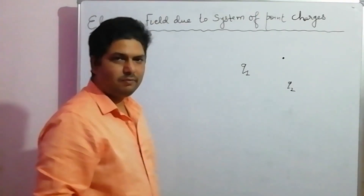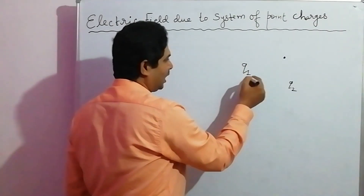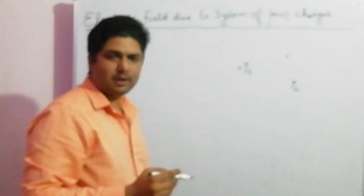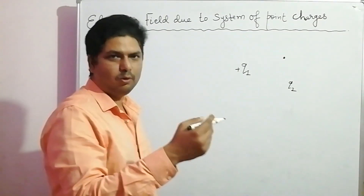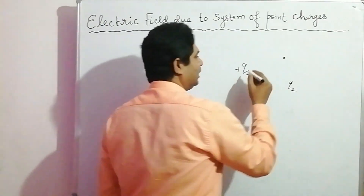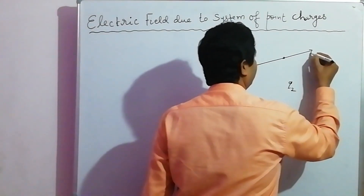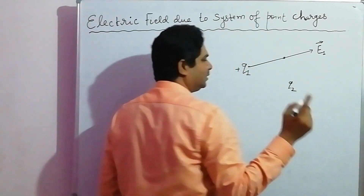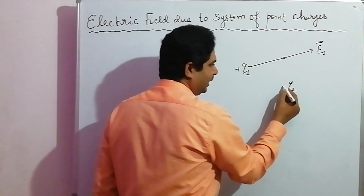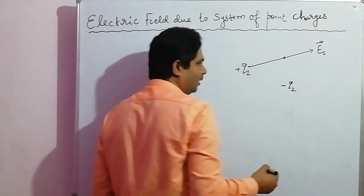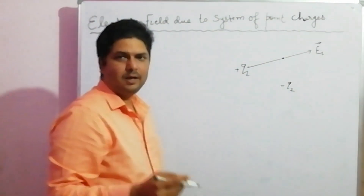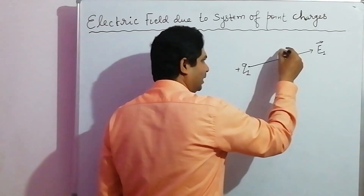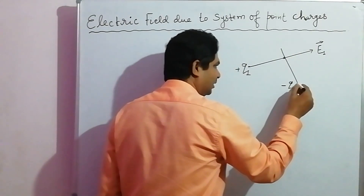Since Q1 is a positive charge, the electric field from Q1 moves outward from Q1. This electric field is known as E1. Suppose Q2 is a negative charge, then the electric field enters toward the negative charge. This is the direction of electric field at this point.